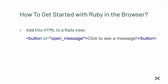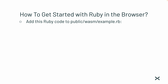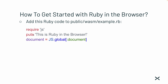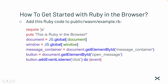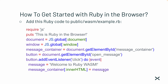After that, you can add some basic markup to your Rails view — a button, an H1 header, and a message container. Finally, I can add Ruby code under public/wasm/example — it can go directly into public since nothing will happen to it in sprockets. Here I just add basic Ruby code: require 'js', then puts 'This is Ruby in the browser', then grab document from JavaScript using JS::Global — the same document you have access to in JavaScript. I can grab window as well. Then I say getElementById — the same exact JavaScript APIs are available in Ruby.